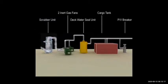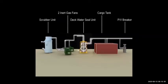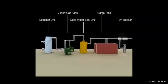First the inert gas is coming to the scrubber and it is being washed and cleaned, then to the blowers. Then the deck seal unit — the gas is passing under the water and then going to the tank. This tank is full of crude oil and you can see it is full of inert gas also.